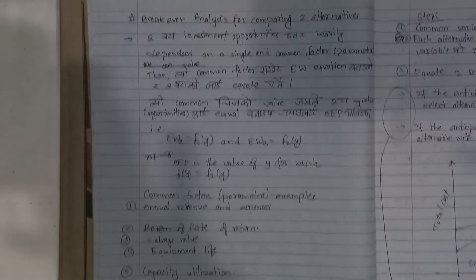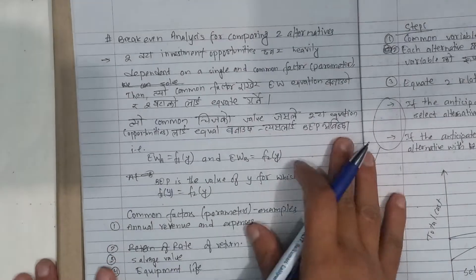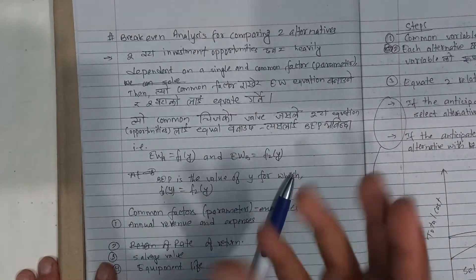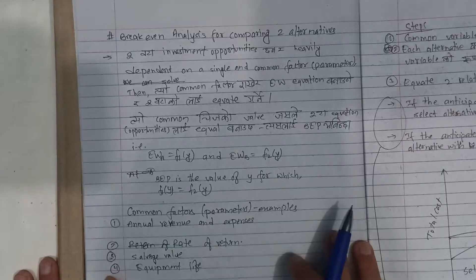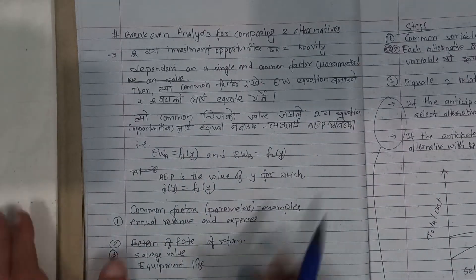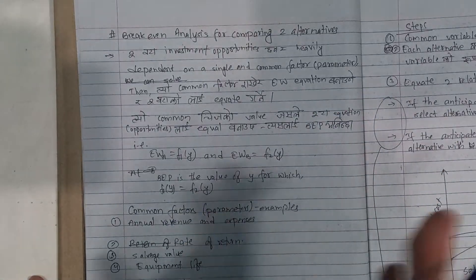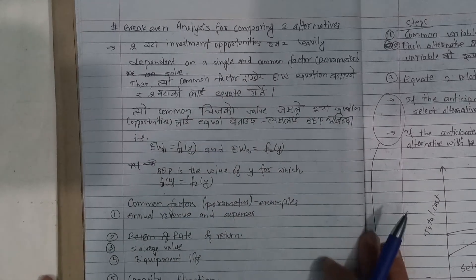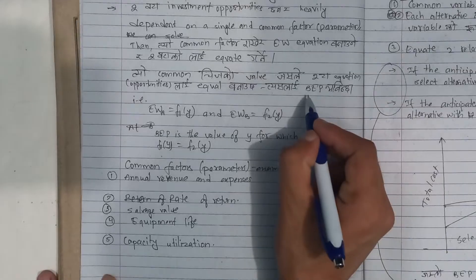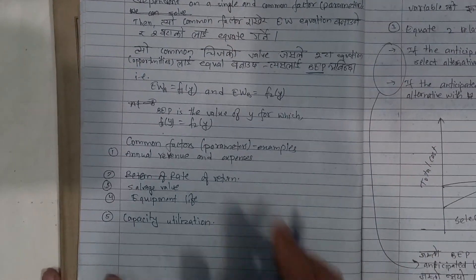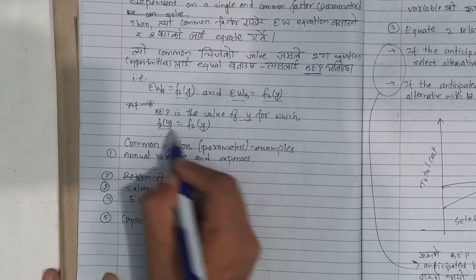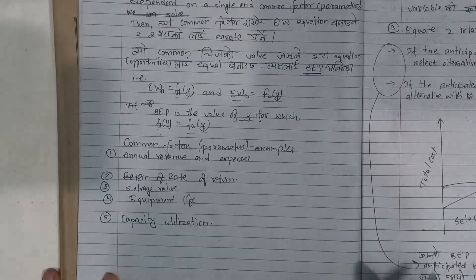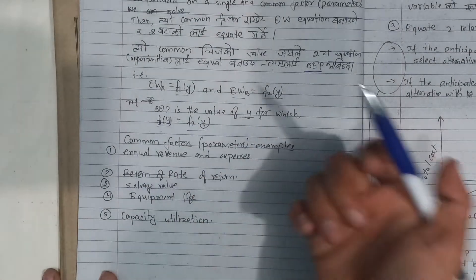Now we have break-even analysis for comparing two alternatives. If you have two investment opportunities — two motors, two projects — you use break-even analysis to find a common factor parameter on which both depend. We write equivalent cost equations for each alternative. Setting the two equations equal — Equation A = Equation B — gives us the break-even point, which is the unknown common variable.